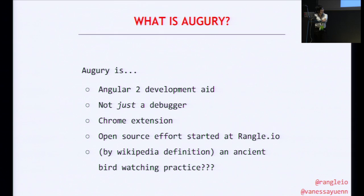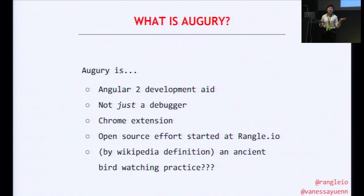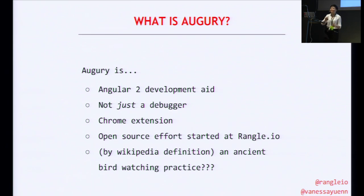Also, according to Wikipedia, Augury is some sort of ancient bird watching practice. Apparently, ancient Roman people used to watch birds and try to predict the future by the shape of the flocks of birds. We thought that's entirely appropriate for a tool that aims to give insights to developers, much like how ancient Romans got insights from bird watching. But don't worry — using Augury, the dev tool, is a lot easier than trying to predict the future from watching birds.